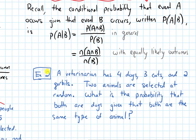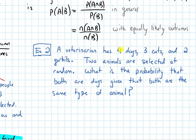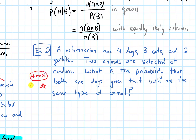The example says that a veterinarian has four dogs, three cats, and two gerbils. Two animals are selected at random. What is the probability that both are dogs, given that both are the same type of animal? I want to give you the opportunity to try this, so pause the video for four minutes to try this question on your own first.